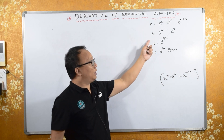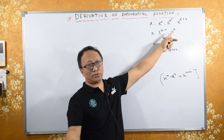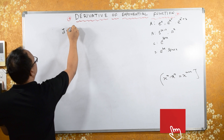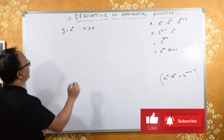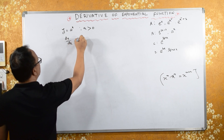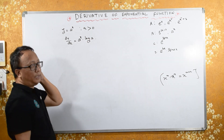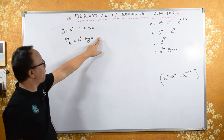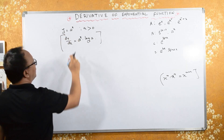Type B: if y equals a raised to x, where a is some constant greater than 0, then dy/dx equals a raised to x into log of a, multiplied by d/dx of x which is 1. This is the formula we use.